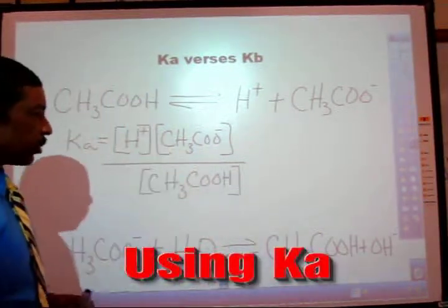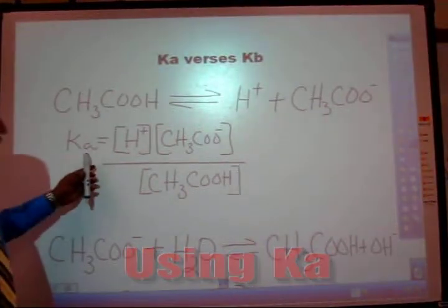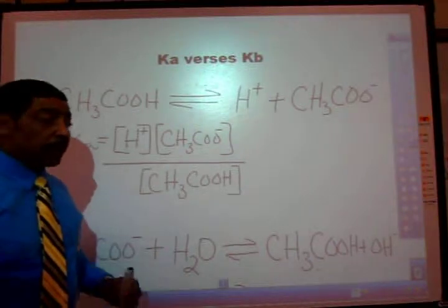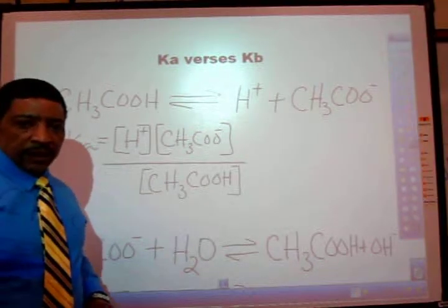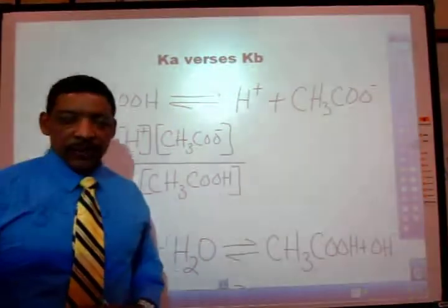The Ka expression for this process is written as follows. Ka is equal to the concentration of hydrogen ion times the concentration of acetate ion divided by the concentration of acetic acid.